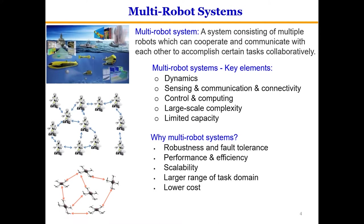Compared with a single robot, a multi-robot system has many advantages such as robustness and fault tolerance, increased system performance and efficiency, scalability, larger range of task domain, and lower cost.